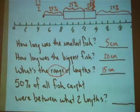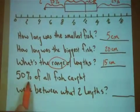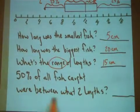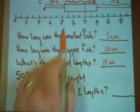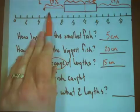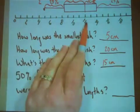So I have kind of an open-ended question for you. It says here, 50% of all fish caught were between what two lengths? Well, the bottom 50% were between 5 and 12 centimeters.